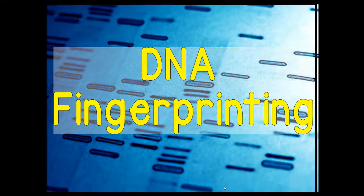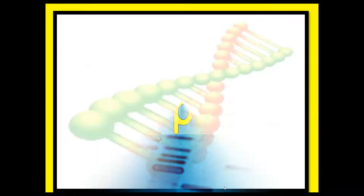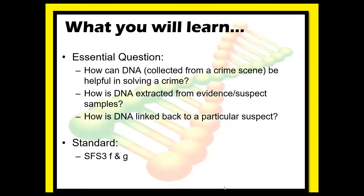Today we are starting on the DNA fingerprinting portion of the unit, so we're going to do a brief overview of DNA. We are going to talk about how DNA is used in forensics, how DNA can be collected from a crime scene, how it can be helpful — specifically how it's extracted from evidence and suspects, and then ultimately how it's linked back to a particular suspect.